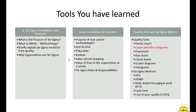Then Six Sigma roles and responsibilities. We moved on to quality tools — Pareto charts, cause and effect diagrams, flow charts, run charts — all these tools we learned. Then into Six Sigma metrics: DPU, DPMO, roll throughput yield, cycle time, and COPQ — cost of poor quality.